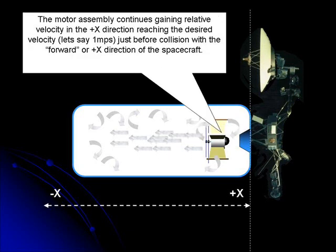The motor assembly continues to travel in the plus X direction, reaching the desired velocity, let's say 1 meter per second, just before collision with the forward or X1 direction of the spacecraft.